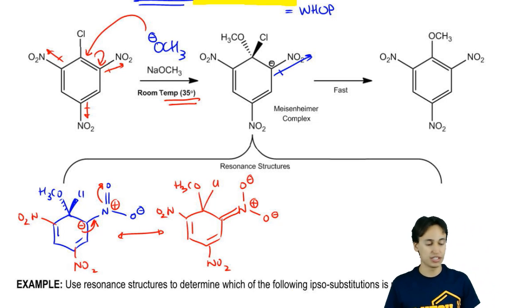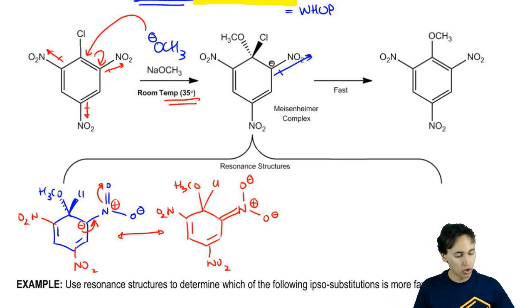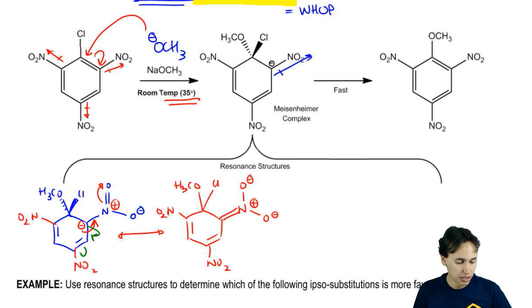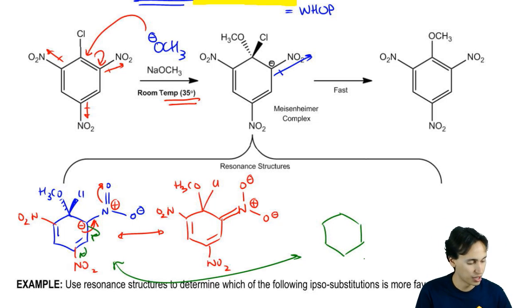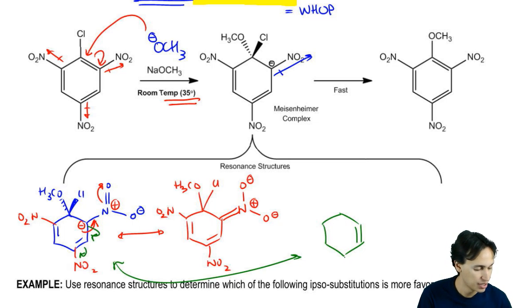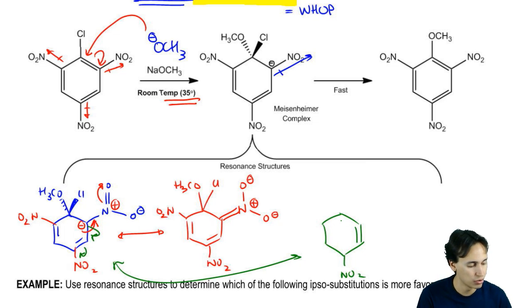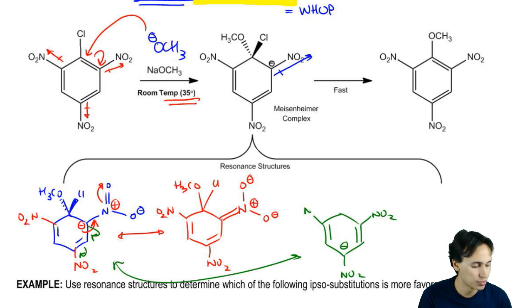See how that resonance structure exists? We can also draw resonance structures of the negative charge moving to the next nitro group — that would be another resonance structure. Altogether there's going to be like six resonance structures; we're not going to draw all of them. I'm just trying to show you how a Meisenheimer complex works. Anywhere that this negative charge goes, it's stabilized by withdrawing groups.